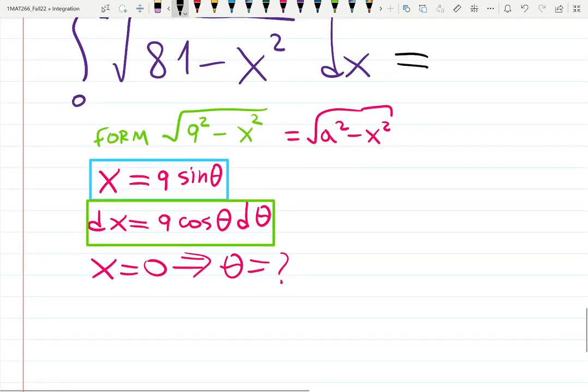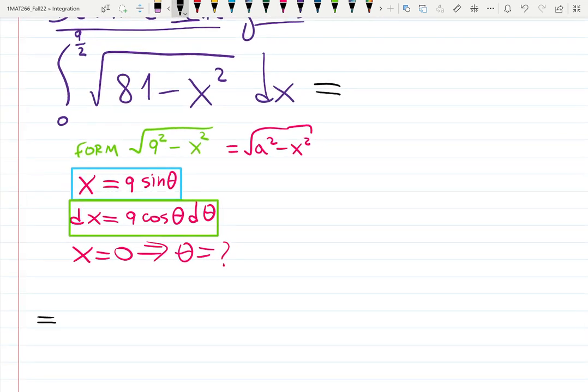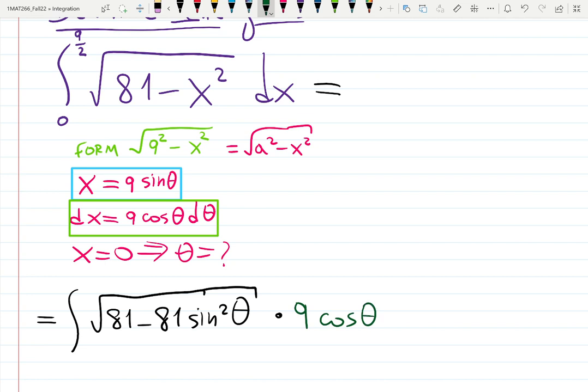Let me write down the integral without limits of integration and I will tell you what is the problem. The integral will be √(81 - 81sin²θ) times dx, which is 9cosθ dθ.